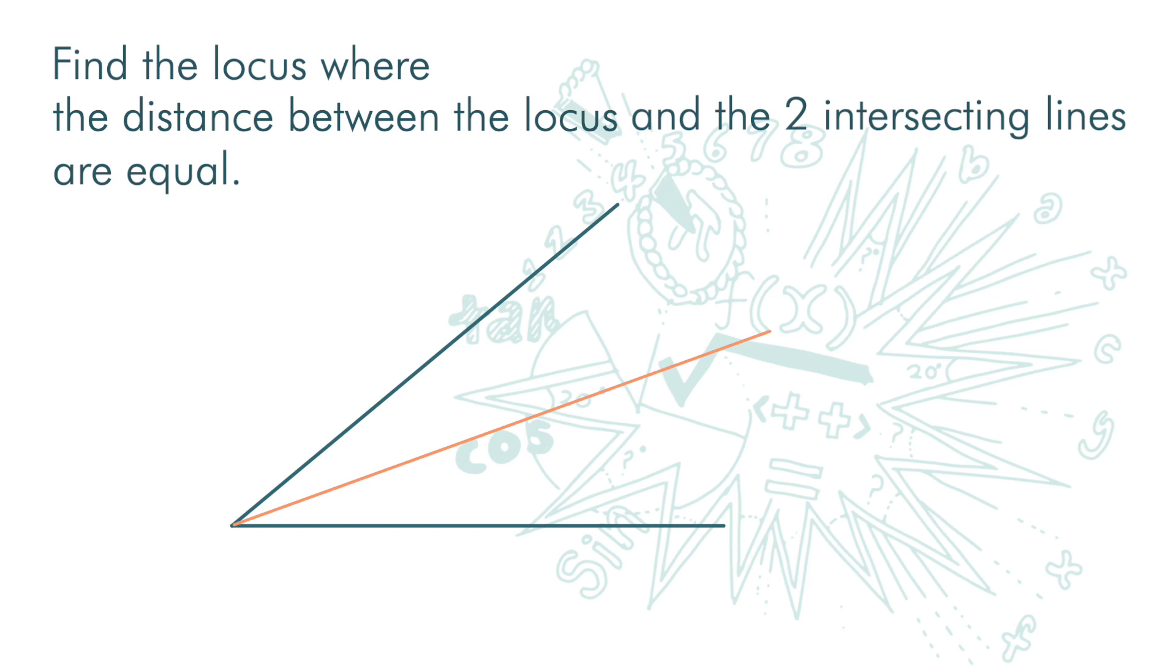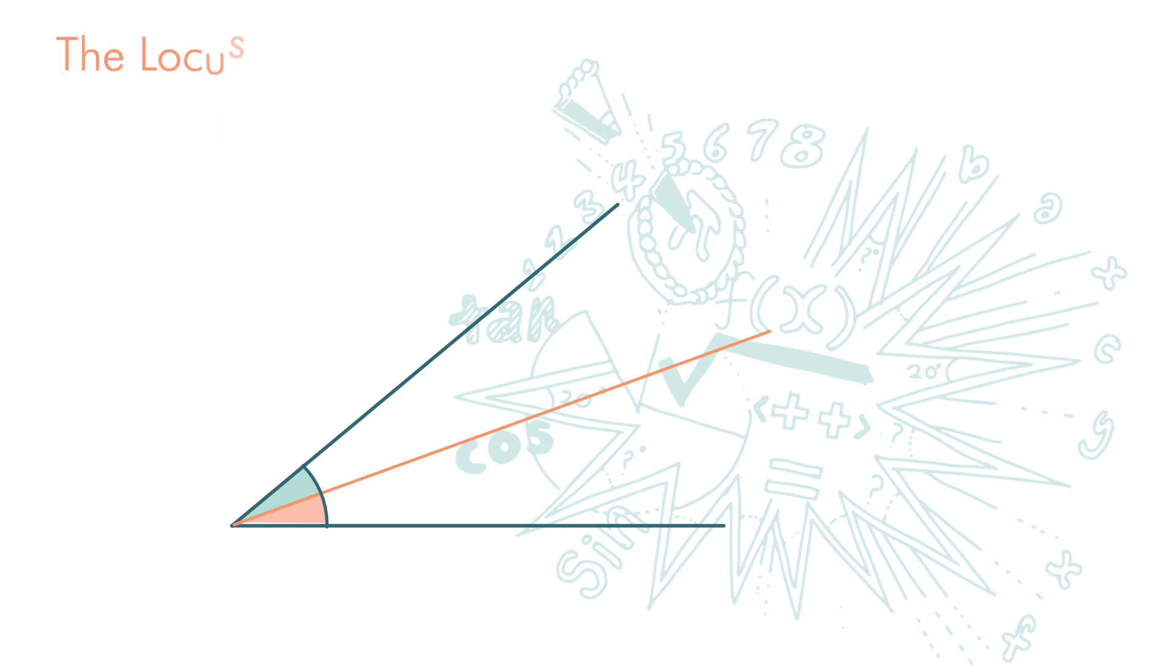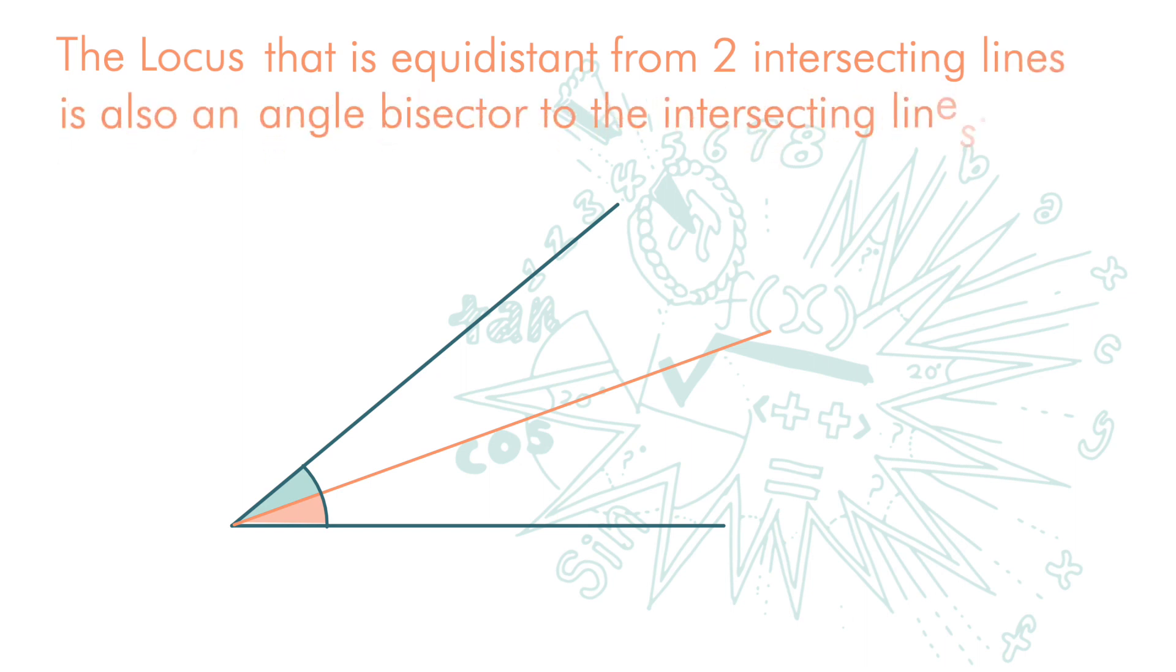Note that this locus also bisects the angle here into two equal halves. So, the locus of points that is equidistant from two intersecting lines is also an angle bisector to the intersecting lines.